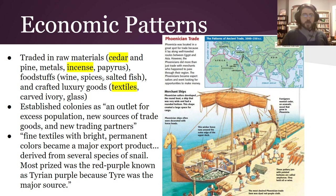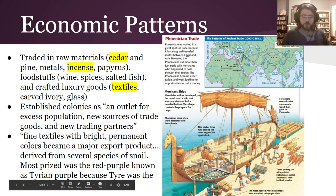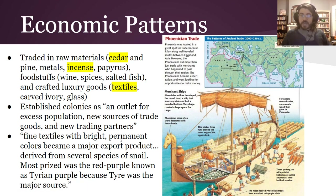They traded in raw materials like cedar wood and metals, incense used often for religious rituals, papyrus — the Egyptian paper — wine, spices, salted fish, crafted luxury goods like textiles, carved ivory, and glass. They made their colonies primarily as an outlet for excess population, but really it was about getting new sources of goods and new trading partners. They are perhaps best known for a kind of red-purple color known as Tyrian purple, mostly from the city of Tyre. It was not just bright and beautiful, it was also permanent — and it's not easy to make permanent dyes. They made it from the shells of snails that could only be found in this and a few other limited places.